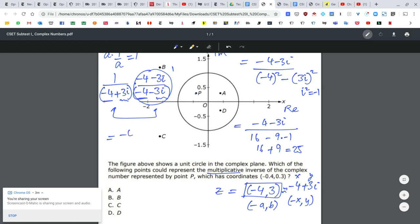The numerator is negative 4 minus 3i, and pretty much on the last step, over 25, which can be rewritten as negative 4 over 25 minus 3i over 25.